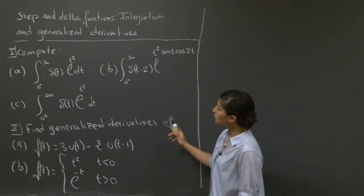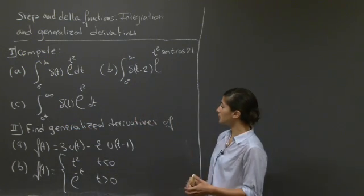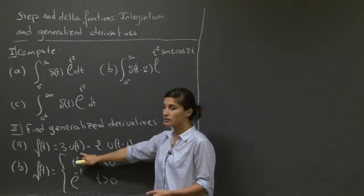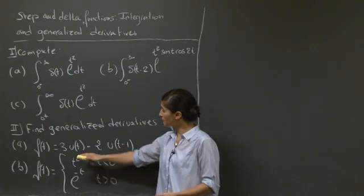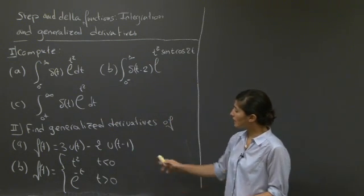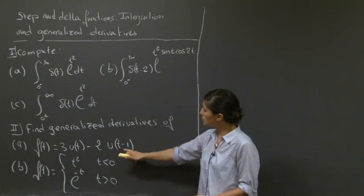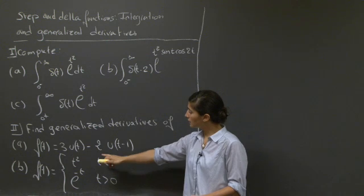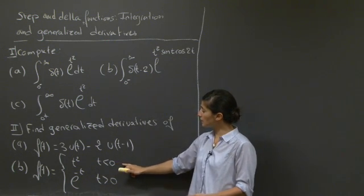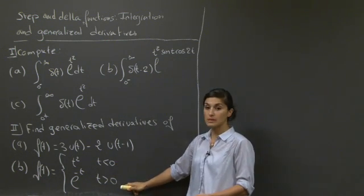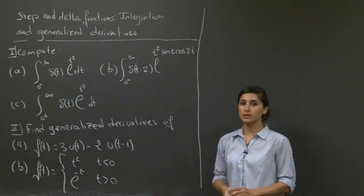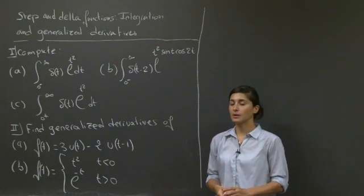The second part asks us to find the generalized derivatives of two functions, where u is the step function. The first is 3u(t) - 2u(t-1). The second is t² for t negative and e^(-t) for t positive. Pause the video and work through this example, and I'll be right back.